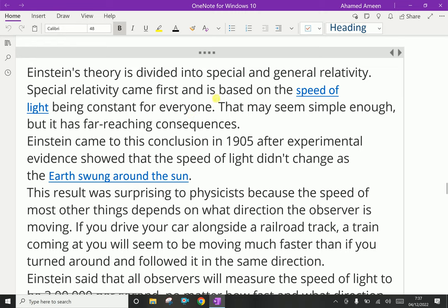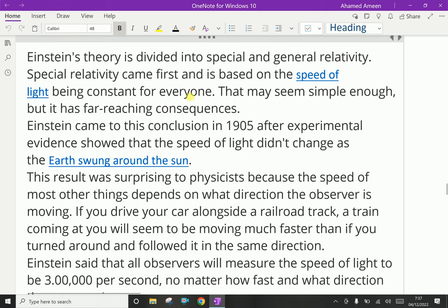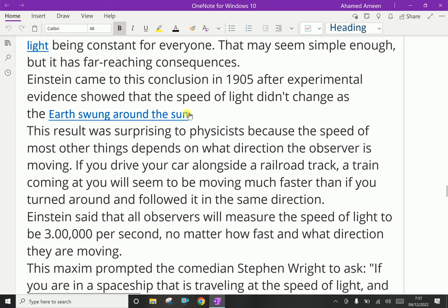Einstein's theory is divided into special and general relativity. Special relativity came first and is based on the speed of light being constant for everyone. That may seem simple enough, but it has far-reaching consequences. Einstein came to his conclusion in 1905, after experimental evidence showed that the speed of light did not change as the Earth swings around the Sun. Even though Earth swings around the Sun, light speed is constant everywhere.